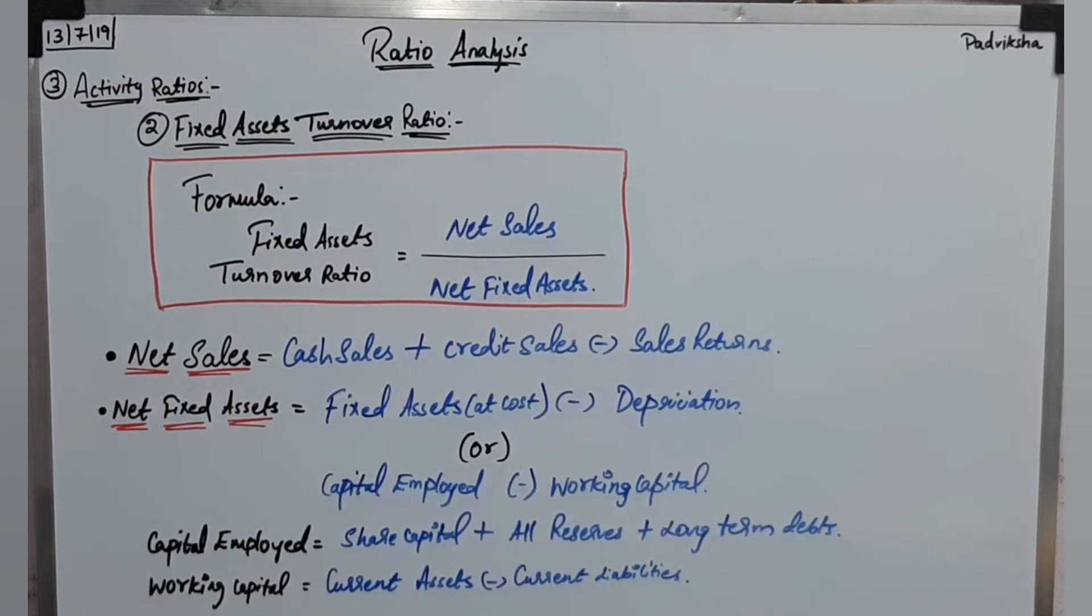As we saw in the last video, capital employed equals share capital plus all reserves, that is reserves and surplus, plus long-term debts, that is long-term borrowings. This is the capital employed formula. Next, working capital. Working capital, as usual you all know, current assets minus current liabilities equals working capital.